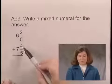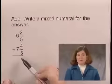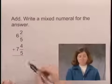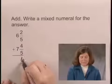Adding 2 fifths plus 4 fifths, we notice we have a common denominator, so we can add the numerators 2 plus 4, which gives us 6 fifths.